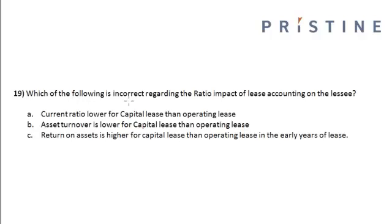Let us look at this problem: which of the following is incorrect regarding the ratio impact of lease accounting on the lessee? Option A: the current ratio is lower for the capital lease than the operating lease. Option B: the asset turnover is lower for the capital lease than operating lease. Option C: the return on asset is higher for capital lease than operating lease in the early years of lease.